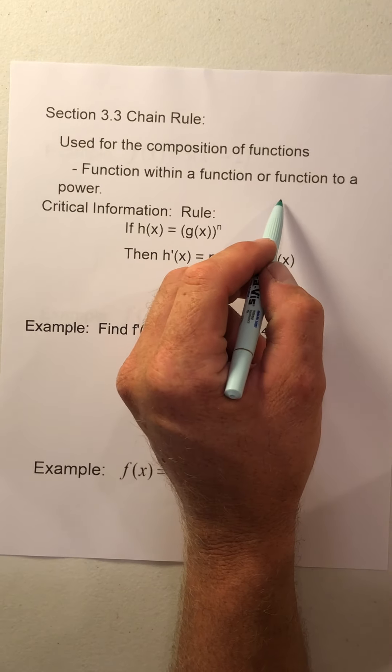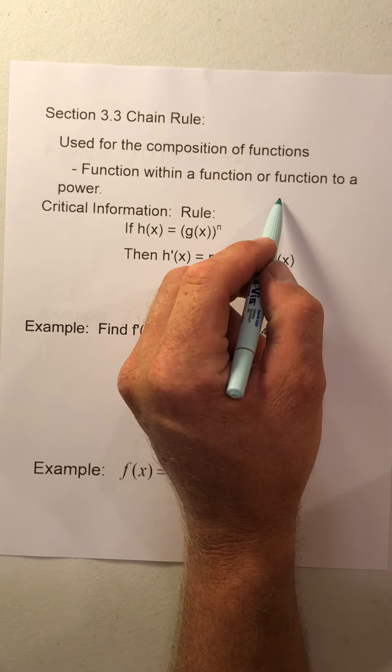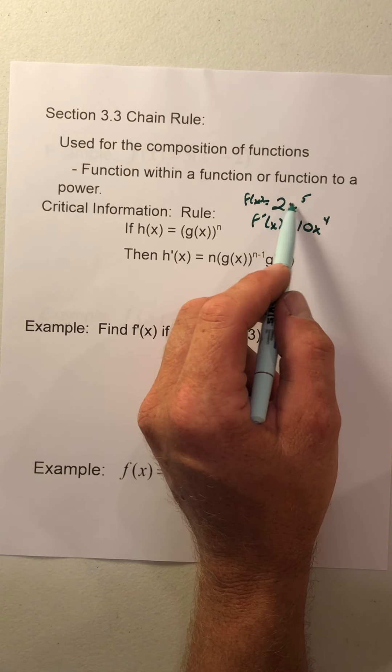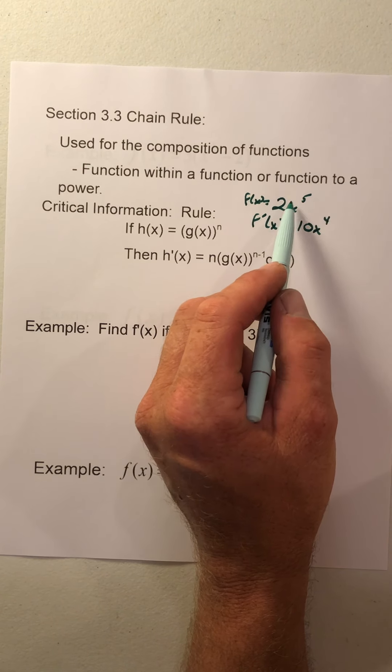We've already seen the power rule where we had maybe 2x to the fifth as our function and the derivative is 10x to the fourth. So what happens now instead of just being a single variable to an exponent, maybe now we have a quantity to an exponent. So maybe now f(x) is 2 times the quantity of x minus 3 to the fifth. So how is that going to change how we find that derivative?